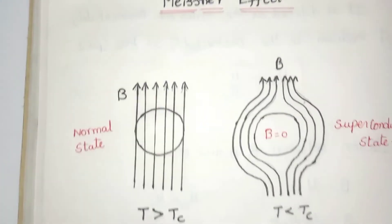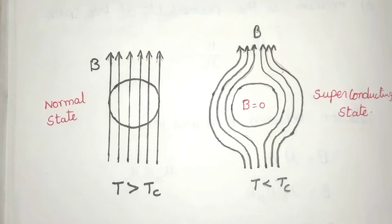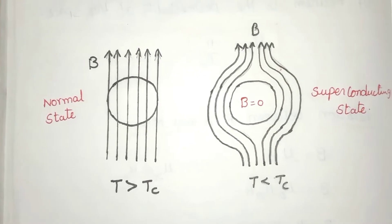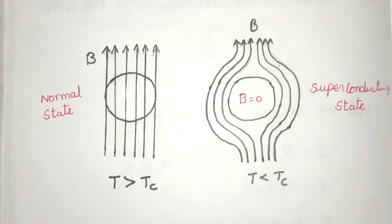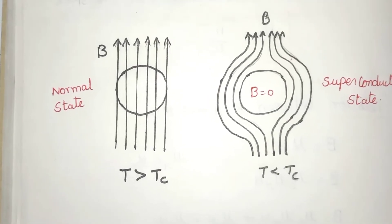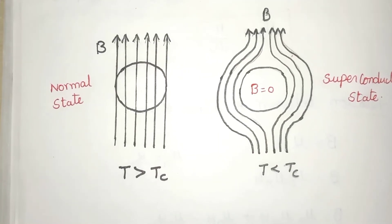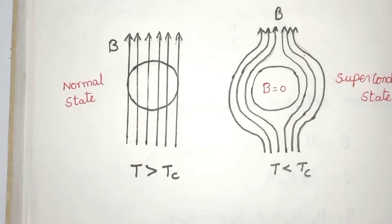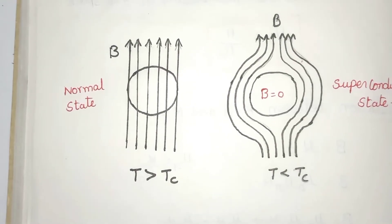Looking at the superconductor definition: in metals and alloys at lower temperatures, the resistivity value decreases to zero at a particular low temperature. This temperature is called the critical temperature Tc, at which the material enters the superconducting state.